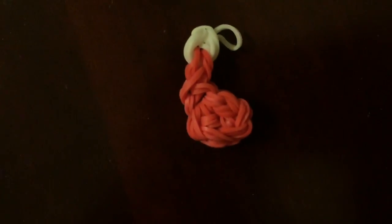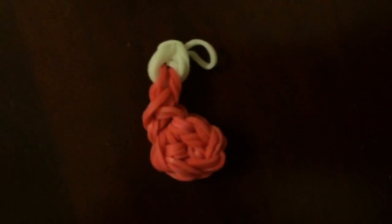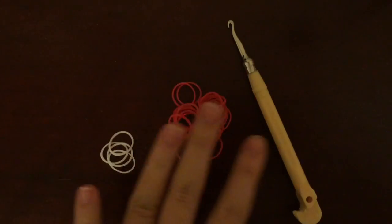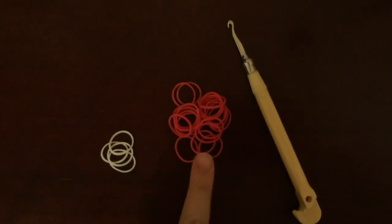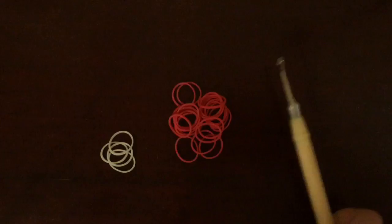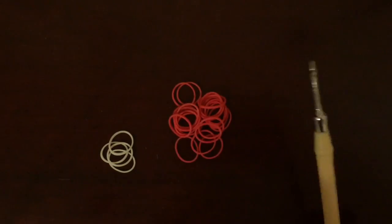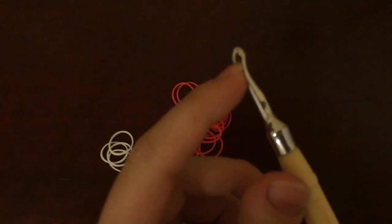Today I'll be showing you how to make a really easy Christmas stocking without the loom. To make this stocking you will need 4 white rubber bands, you will need 22 red rubber bands, and you will need a hook. Now if you don't have a hook you could use the end of a pencil or pen, it just makes it much easier with the hook.